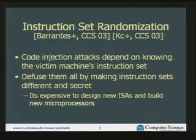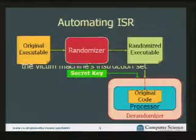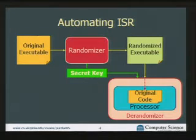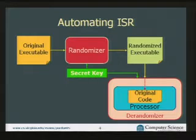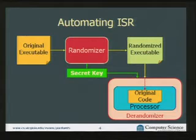It's pretty difficult to design new instruction sets — building a new microprocessor is very expensive. So we need a way to get this property without doing that, and the way is to use a randomizer. Instead of running the executable directly, we have a program that takes the executable and a secret key and produces a randomized executable. When we execute the program, instead of executing it directly on the processor, a derandomizer surrounds the processor, decrypts the randomized executable to get the original code back, and that's what runs on the processor.